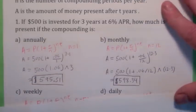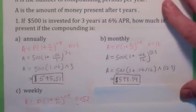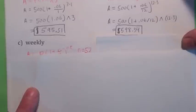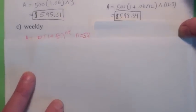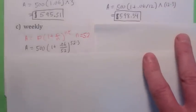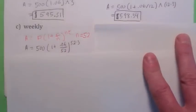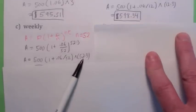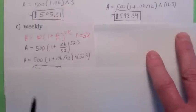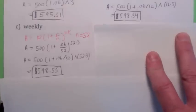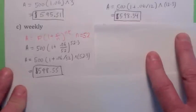But let's keep going. Now if it's compounded weekly, let's see there's 52 weeks in a year, right? So if it's compounded weekly, then notice the interest rate is getting smaller, but the number of compounding periods is getting bigger. So you get this, make sure you put parentheses around the exponent. And when you simplify that, you should get $598.55.